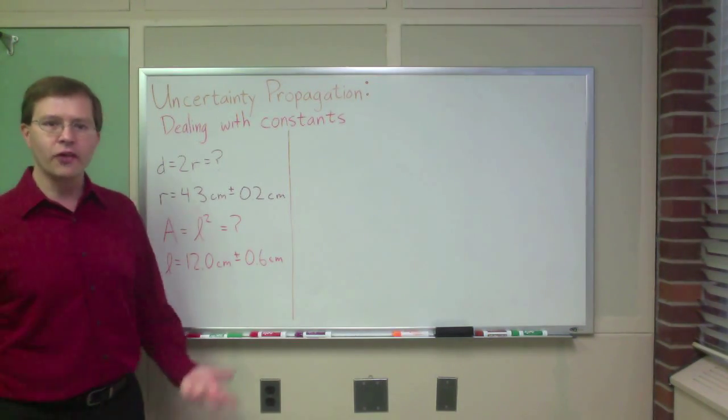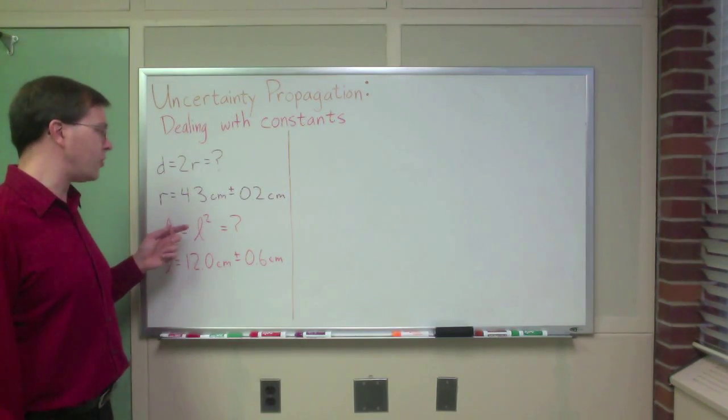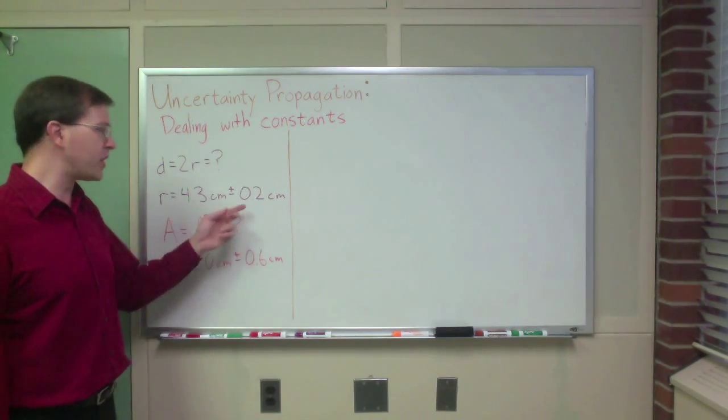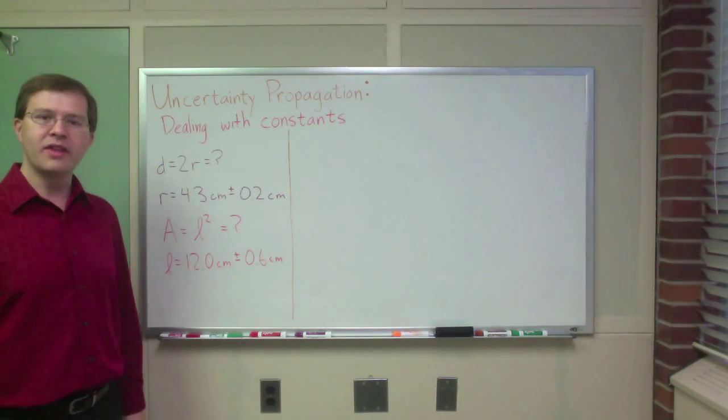First of all, let's just talk about it. For instance, consider the example where I've measured the radius of some circle to be 4.3 centimeters with an uncertainty of 0.2 centimeters in that radius. I want to know the diameter of that circle.